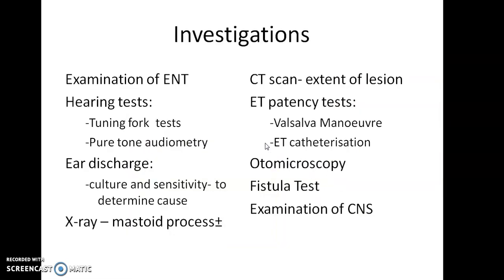Coming to the investigations in CSOM: examination of the nose and throat is important since all three are interconnected — examination of the nasopharynx and oropharynx becomes essential. Hearing tests should be done, including tuning fork tests to identify conductive hearing loss, or sensorineural hearing loss if inner ear complications are involved. Pure tone audiometry is done to note at which frequency hearing loss is most severe. Ear discharge is usually mucopurulent or purulent with blood tinge; culture and sensitivity is done to identify the exact bacteria. X-ray of the mastoid process is essential — in tubotympanic type it is usually not involved, but in atticoantral type it will be involved. CT scan is done further to evaluate the extent of the lesion.